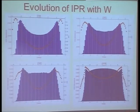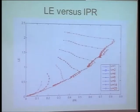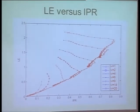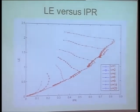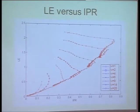Even the density of states has some peculiar features which we have some explanations for. If you plot the Lyapunov exponent versus the inverse participation ratio for different values of W, you get curves that at large W have two branches: one is a branch at the center of the band, then all of a sudden the inverse participation ratio takes a U-turn and gives you the other branch.